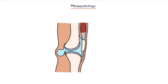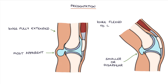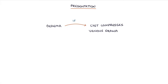On examination, the lump will be most apparent when the patient stands with their knees fully extended. The lump will get smaller or disappear when the knee is flexed to 45 degrees, and this is referred to as Foucher's sign. Oedema may occur if the cyst compresses the venous drainage of the leg.